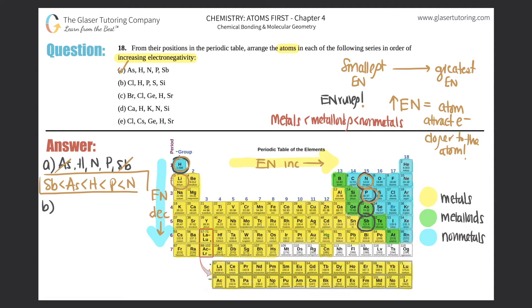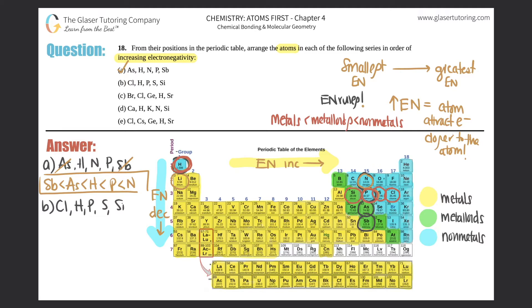For B, we have chlorine, hydrogen, phosphorus, sulfur, and silicon. Silicon is the only metalloid here, and all the others are non-metals. So even though it looks like hydrogen would have the least electronegativity, actually silicon has the least because it is the only metalloid. Metalloids always come first, then non-metals.